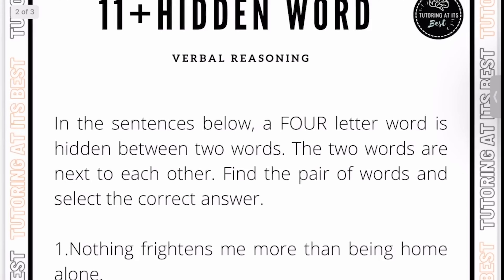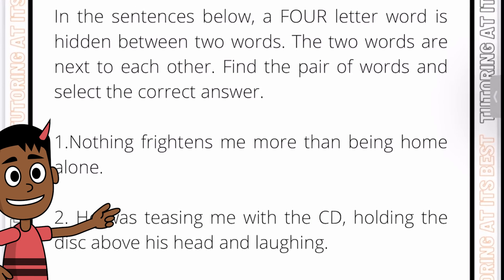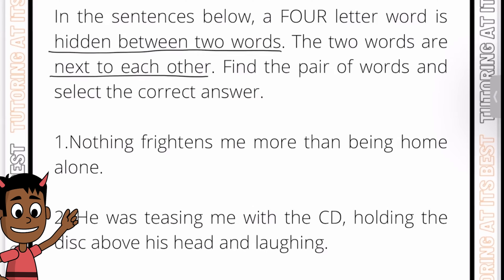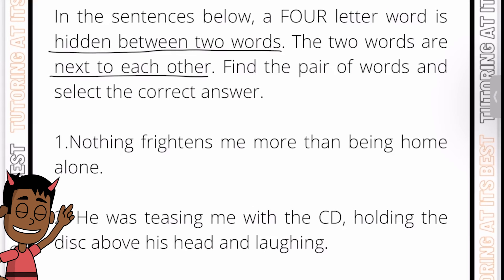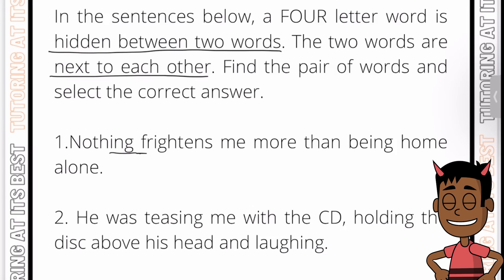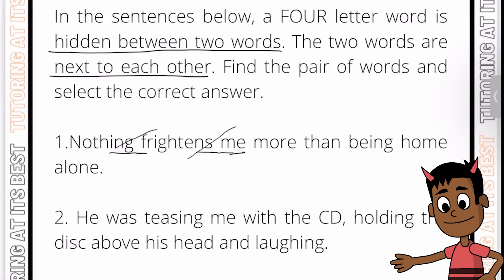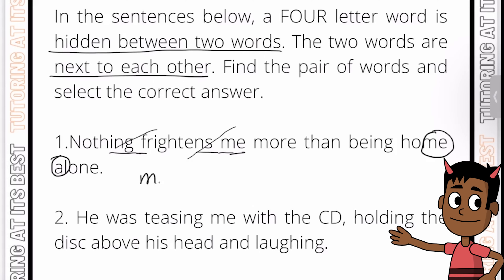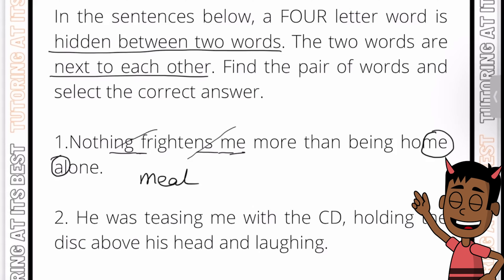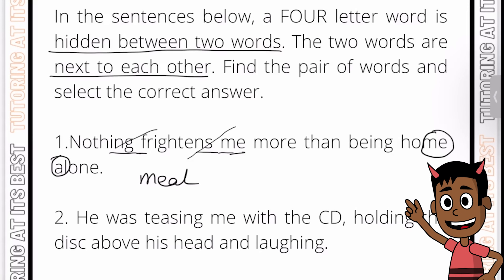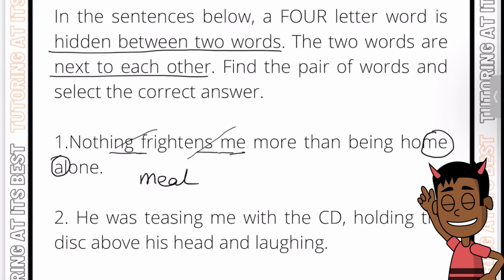A four-letter word is hidden between two words next to each other — that's the key information. Let's take a look at Question 1: 'Nothing frightens me more than being home alone.' Looking at the letters, I notice M-E-A-L, which spells 'meal.' So 'home alone' is the correct answer, because 'meal' is hidden between 'home' and 'alone.' Fun fact: the movie Home Alone is listed in the Guinness World Records as the highest-grossing live-action comedy film ever.